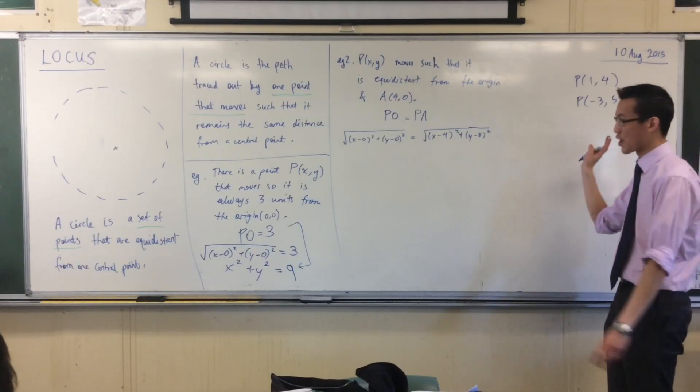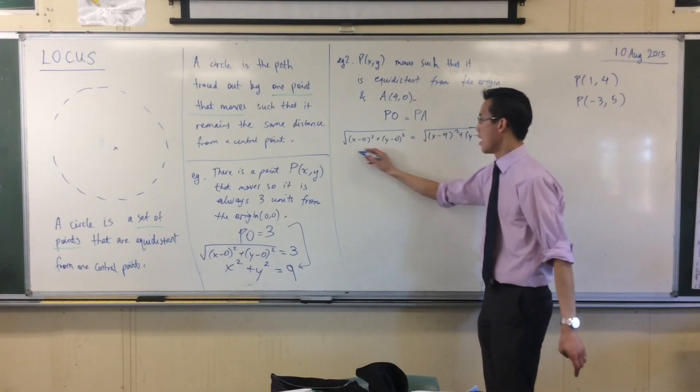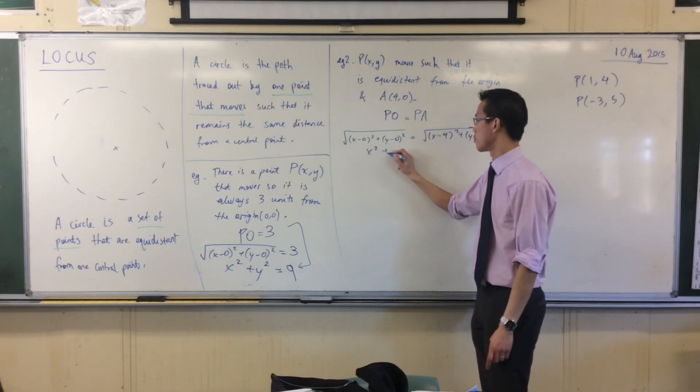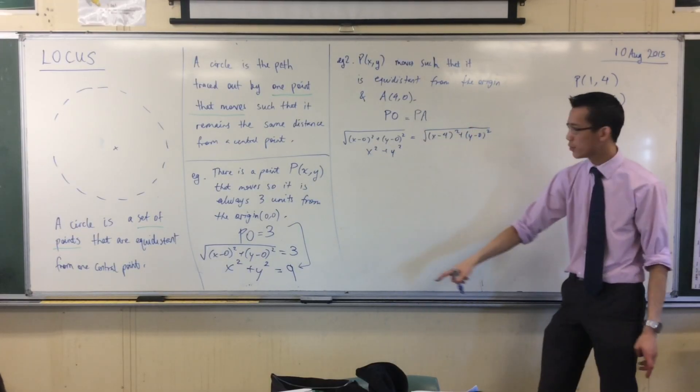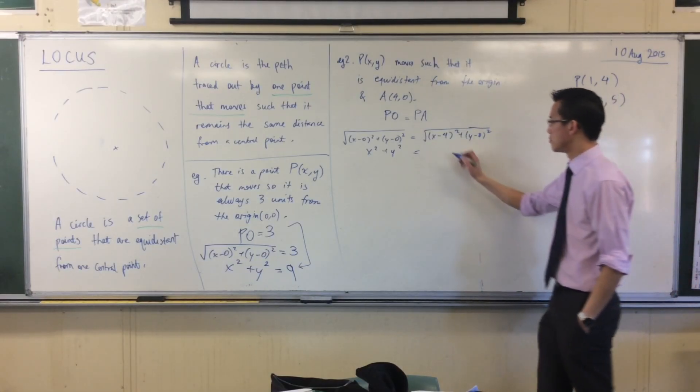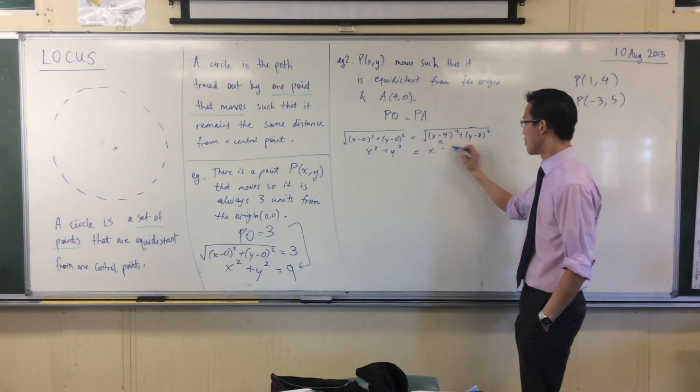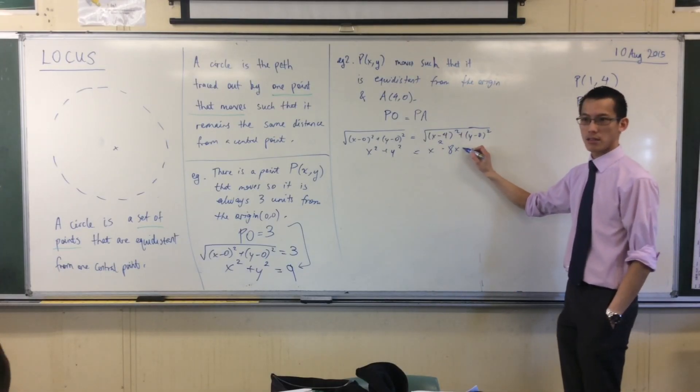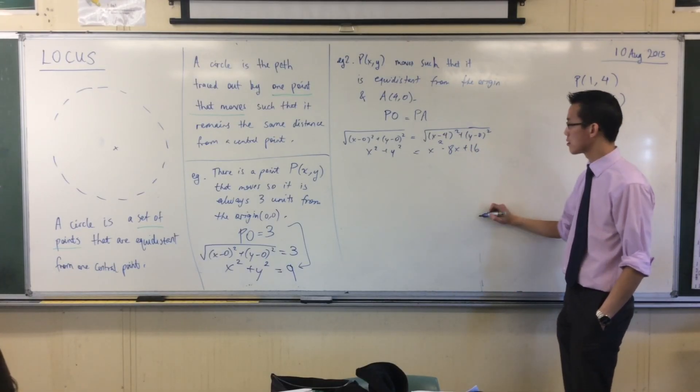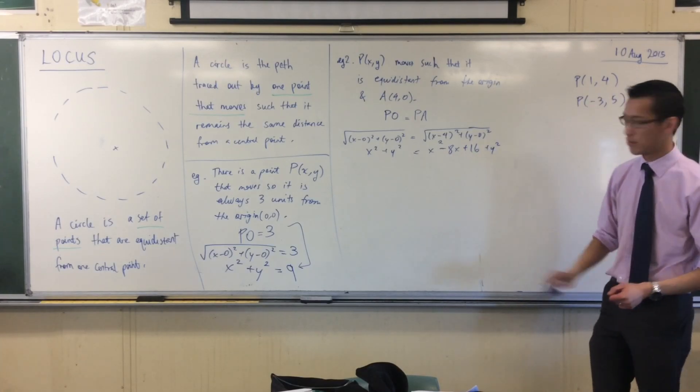I'm going to square both sides here, so I don't have to worry about all these square roots. They are both positive numbers, so no problems there. I'm going to get over here, x squared plus y squared, just like I got before. What am I getting here? x minus 4 squared. This is, when I expand this, I'm getting x squared minus 8x plus 16 plus the same y squared I have on the other side. You okay with that?